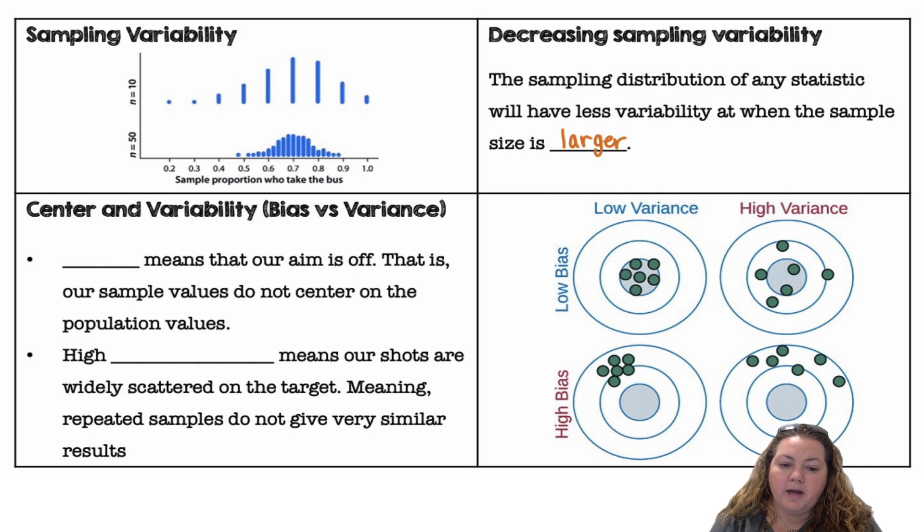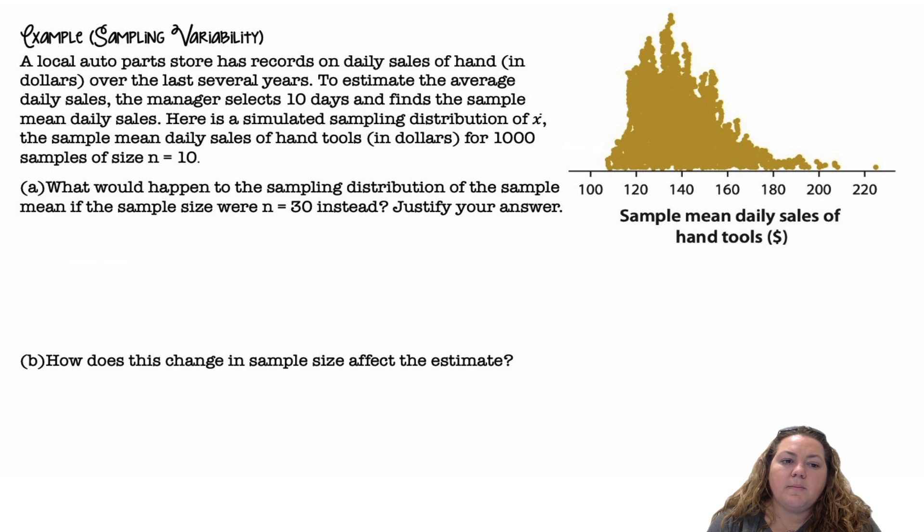Center and variability, bias versus variance. Bias means that our aim is off. That is, our sample values do not center on the population values. High variability means our shots are widely scattered on the target, meaning repeated samples do not give very similar results. So there's more variation and difference between your results. And here's a graphic using a target for sampling variability.